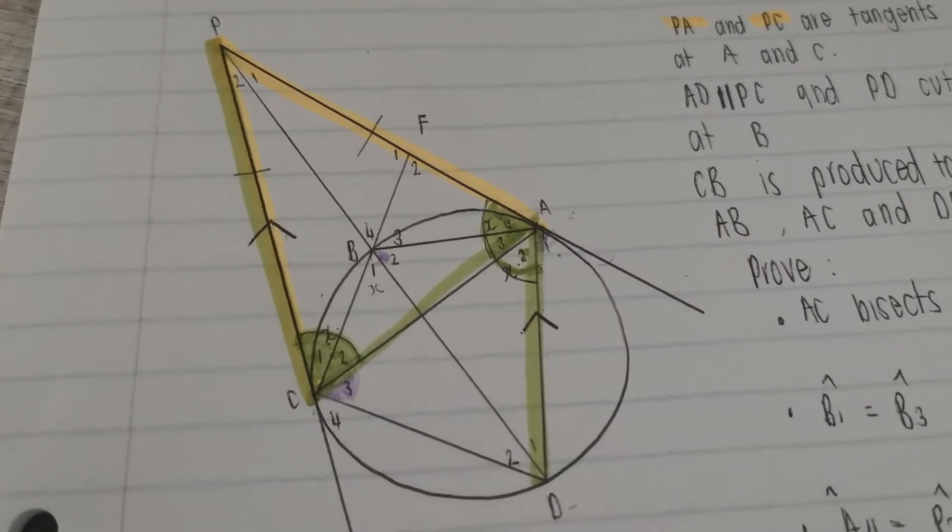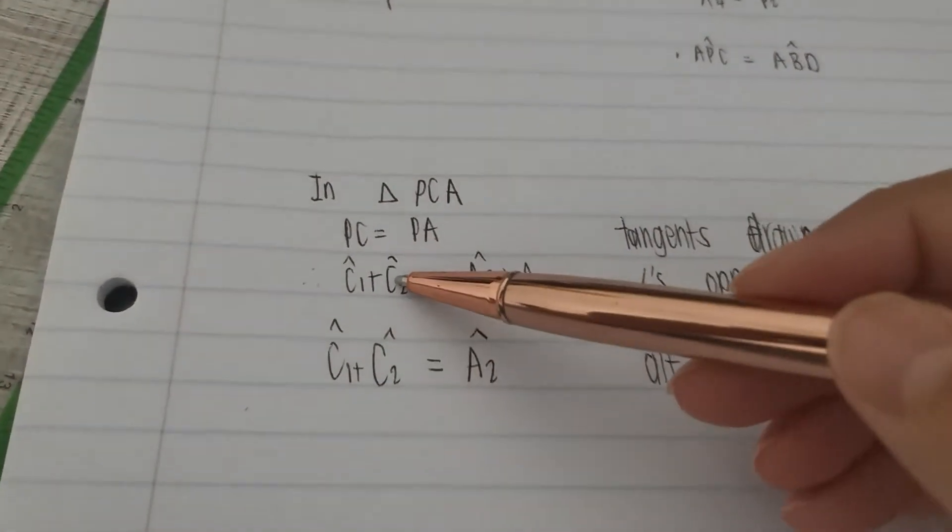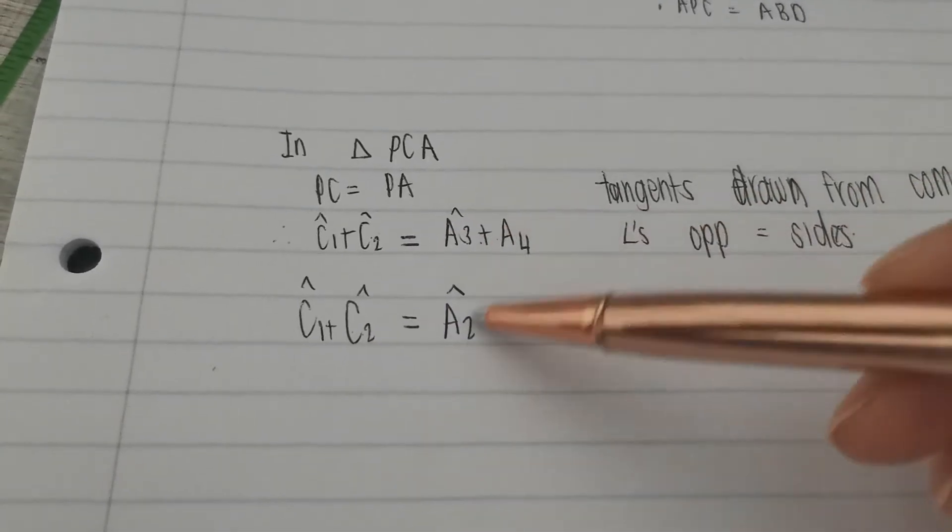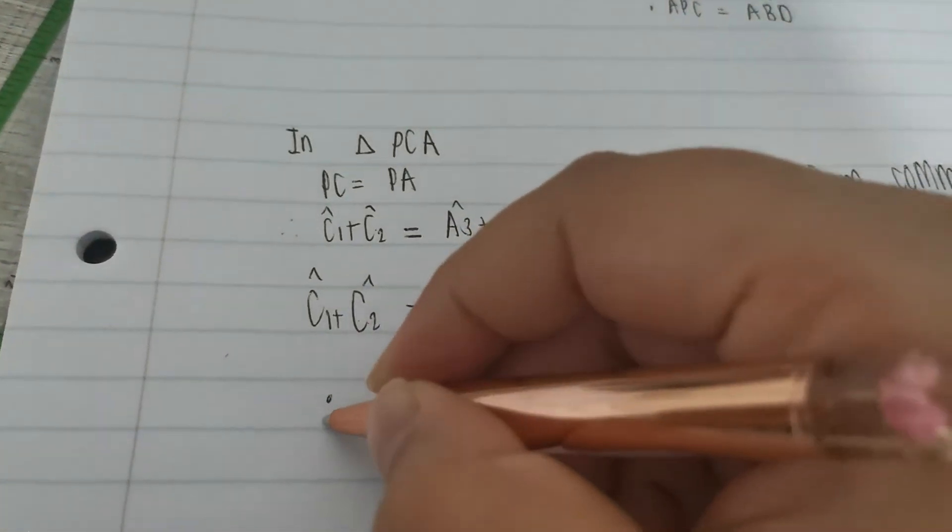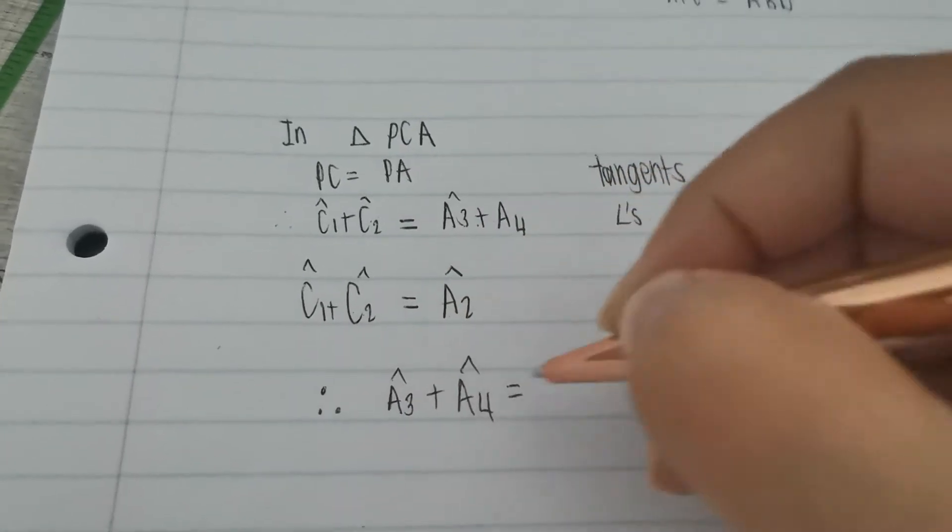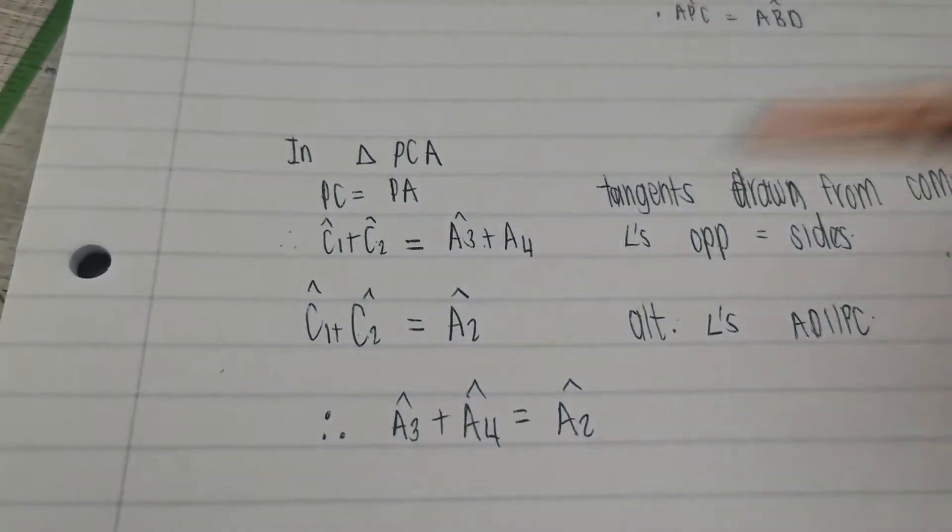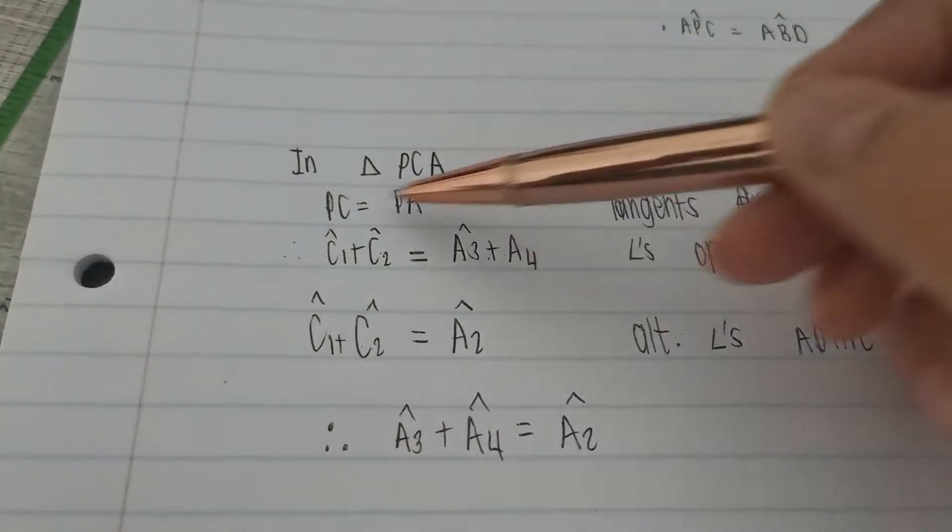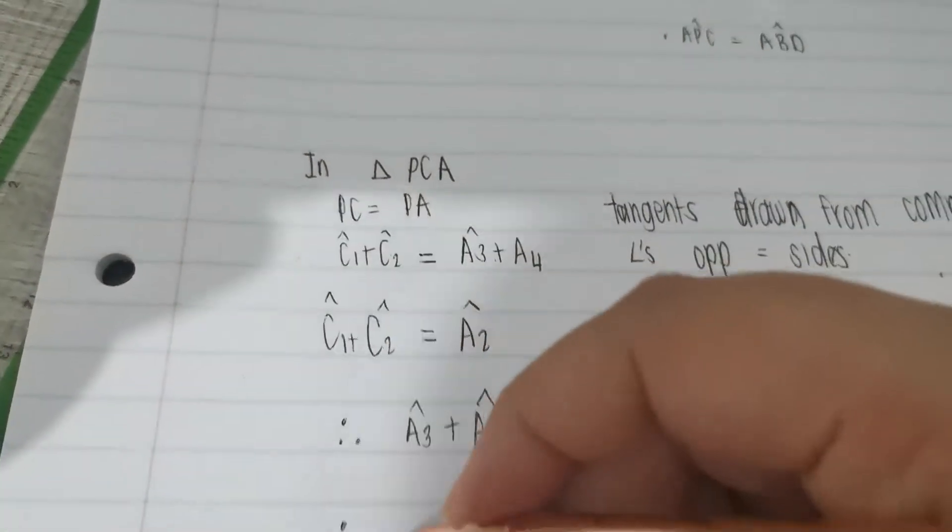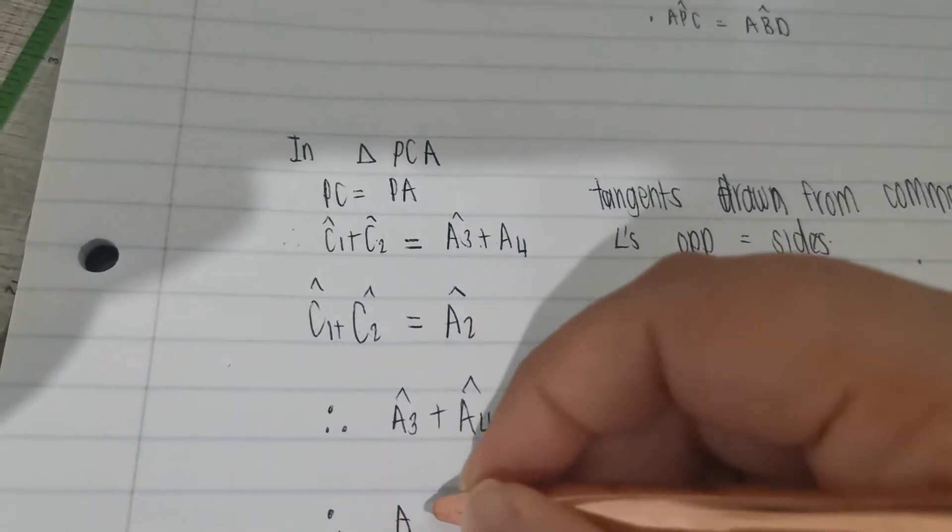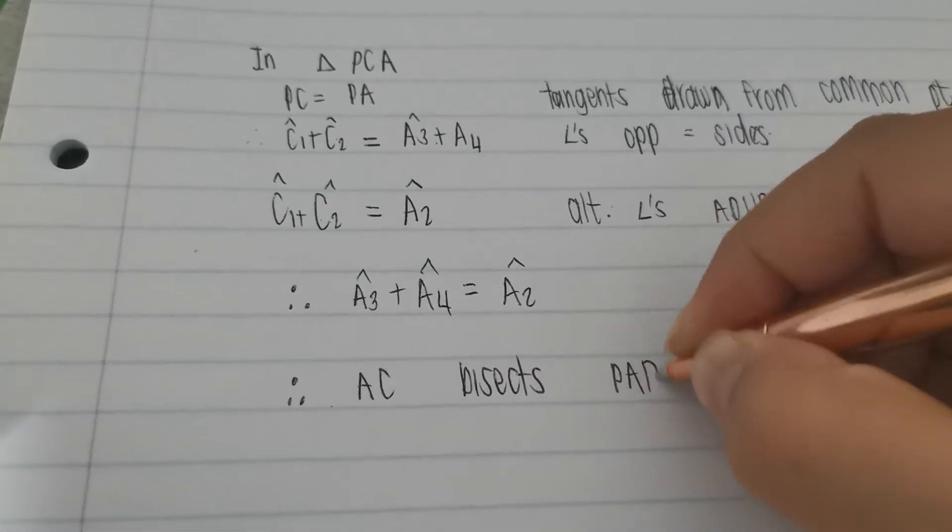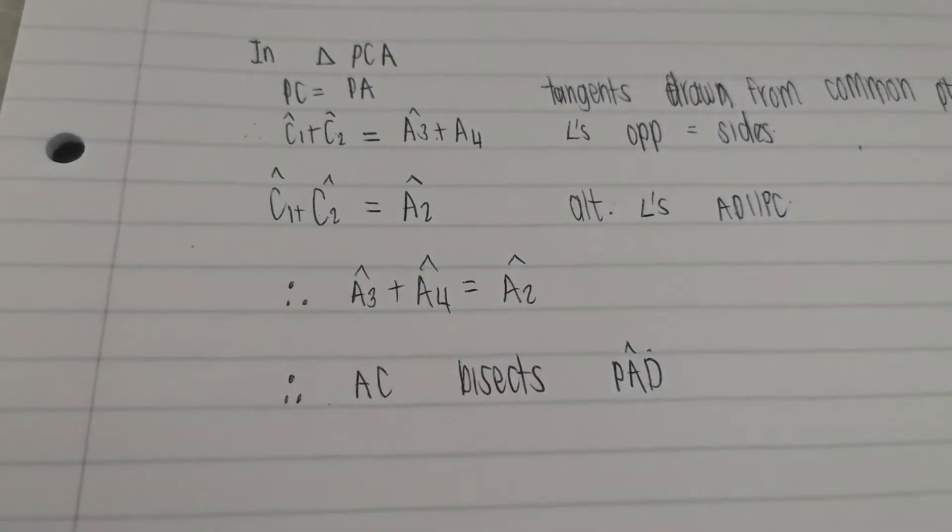Let's move on. We know that angle C1 plus C2, this one, is equal to A2. And the reason that we discovered this was alternate angles, AD parallel to BC. So, now I've connected them all, they're all green. So because this is equal to this, this is equal to this, and you can see these two are the same, we can conclude that these two are the same. So, we can say, therefore, A3 plus A4 is equal to A2. There's no reason for this, we just drew a conclusion based off of this stuff here. And now we can conclude, therefore, AC bisects angle PAD. And there we go. We are done with that question.